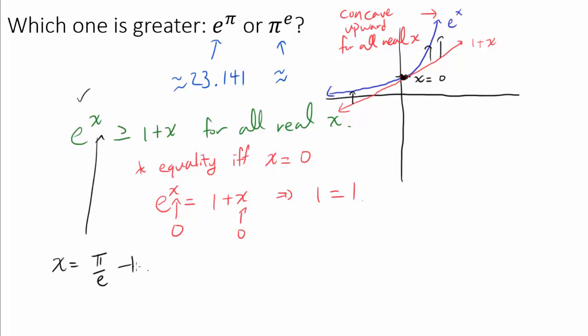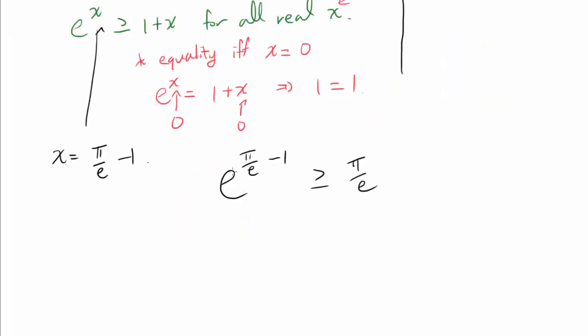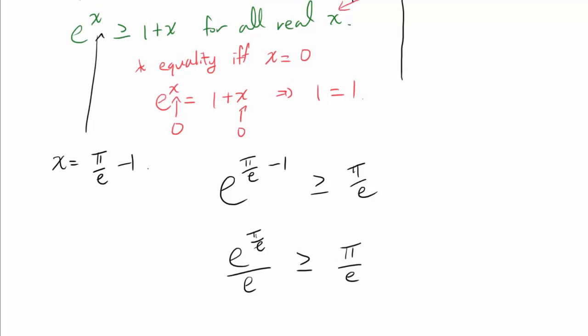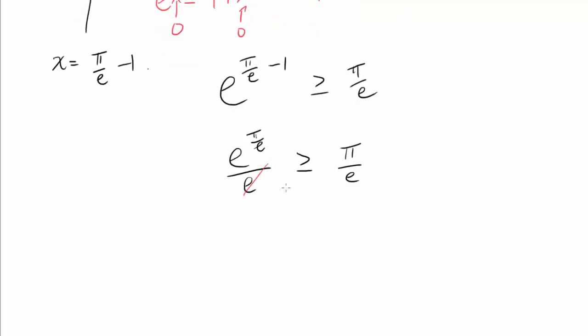Why? Because when x is pi over e minus 1, we get e to the pi over e minus 1 is greater than or equal to 1 plus pi over e minus 1 or pi over e. And because e to the negative first power is the same thing as dividing by e, we have this equality. And we see that e is going to cancel out. These e's are going to cancel out. And raising each side with the power of e gets us e to the pi is greater than or equal to pi to the e.